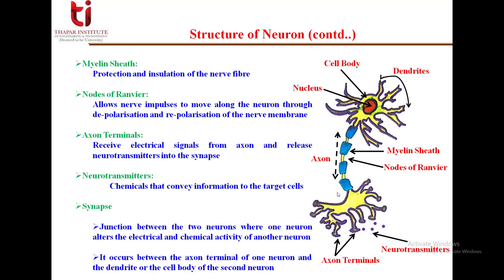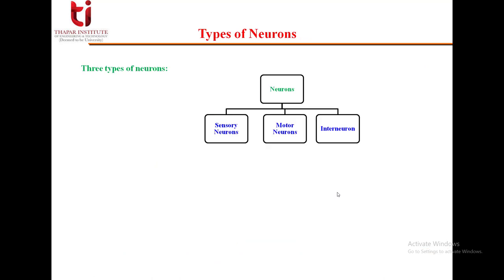This was the complete structure of the neuron. Now let's see what the main types of neurons are. We have three different types: sensory neurons, motor neurons, and interneurons.